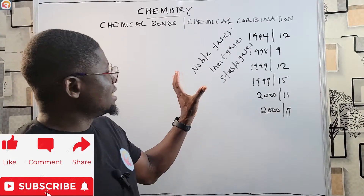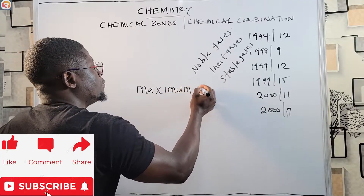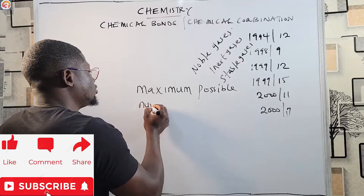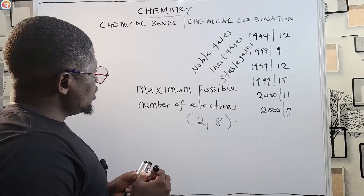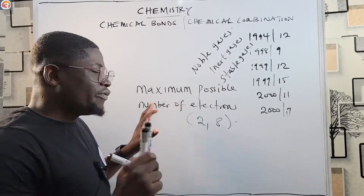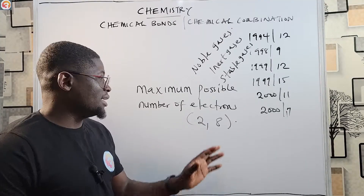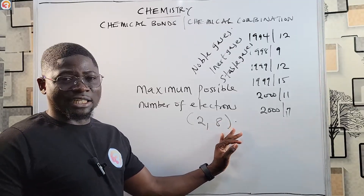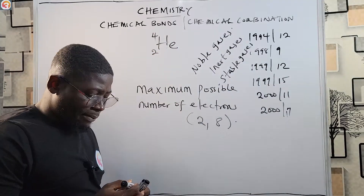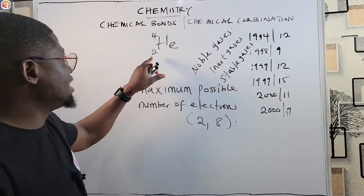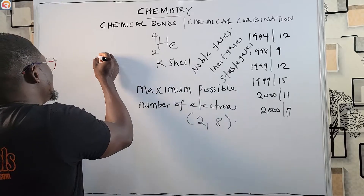Noble gases can hold their maximum possible number of electrons in their outermost shell — either two or eight. For example, helium has atomic number 2 and mass number 4. Helium only has the K shell, and it has two electrons in that K shell, making it very stable.